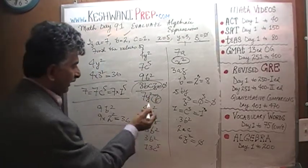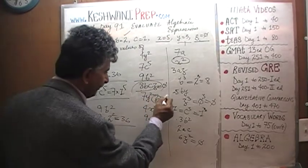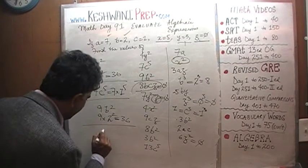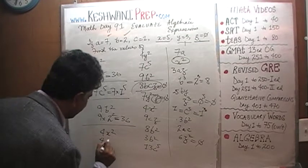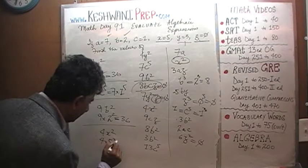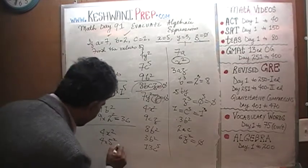7Y squared times Z, again 0 times anything is 0, that is going to be 0. 4X squared, 4X squared, 4 times X, X is 5. 5 squared is 25 times 4, it's going to be 100.